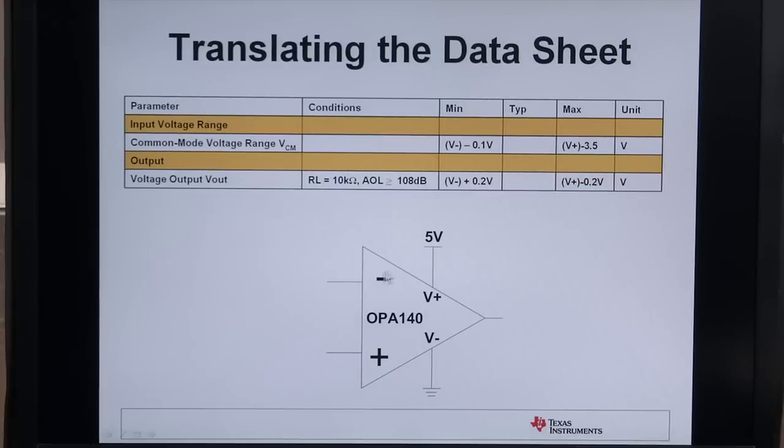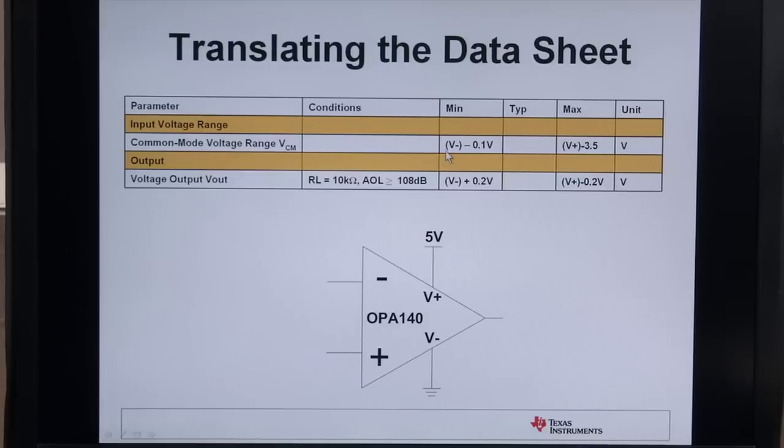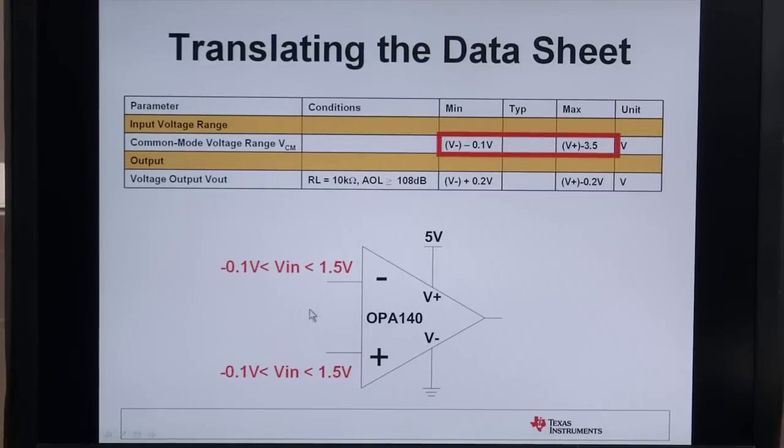Let's look at a data sheet. How is this defined? We have the input common mode range given here and we have a minimum specification and a maximum specification and they're relative to the power supplies. The negative supply is zero volts in this case so zero volts minus 0.1 gives us a negative 0.1 volt for the minimum common mode voltage. The positive supply is 5 volts minus 3.5 so the maximum input swing is 1.5 volts. Going above 1.5 or below negative 0.1 will cause a non-linear output.